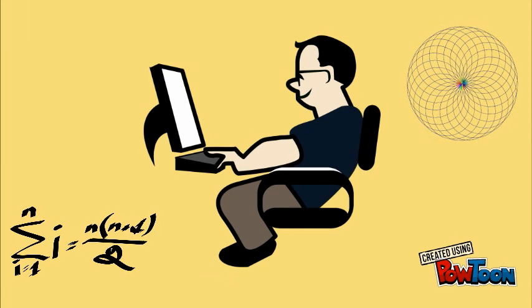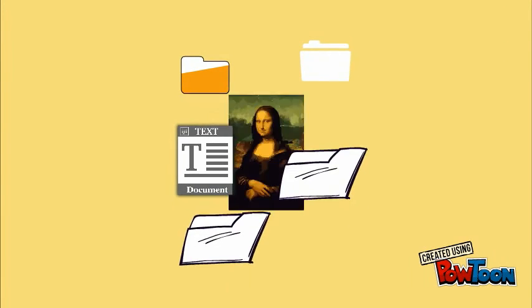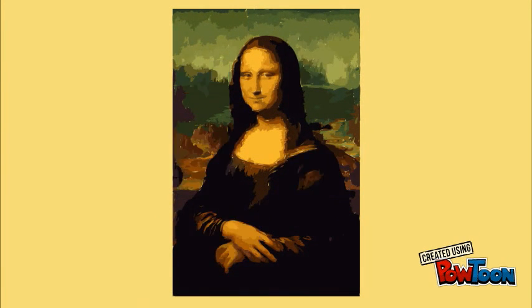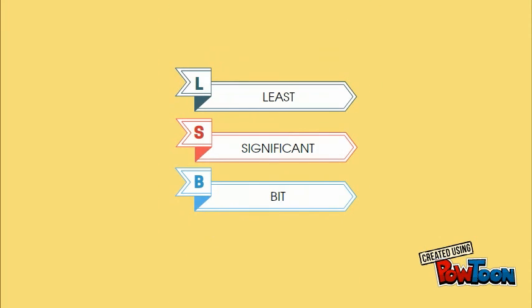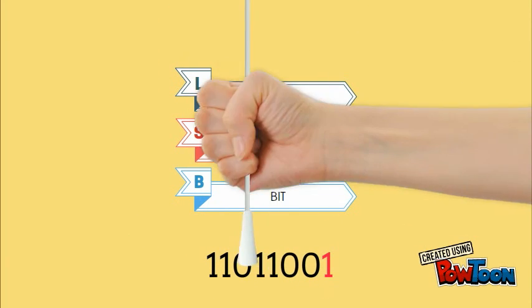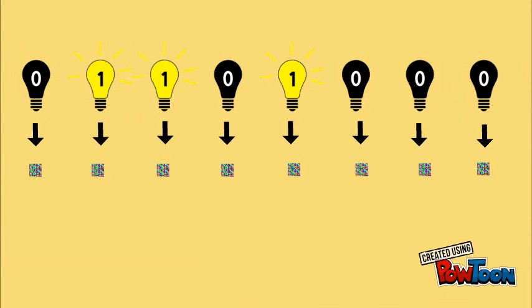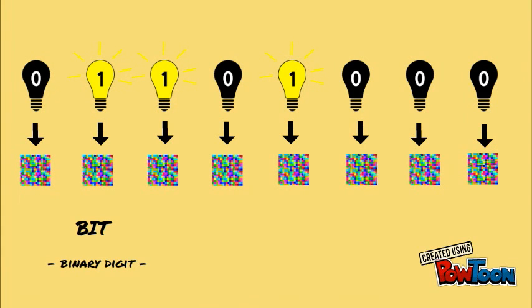However, steganography today is far more sophisticated, enabling users to hide large files in images. Probably the simplest and most effective way of doing that is the least significant bit insertion. In general, each byte of an image is represented by 8 bits, which in turn represent 8 pixels on the screen.